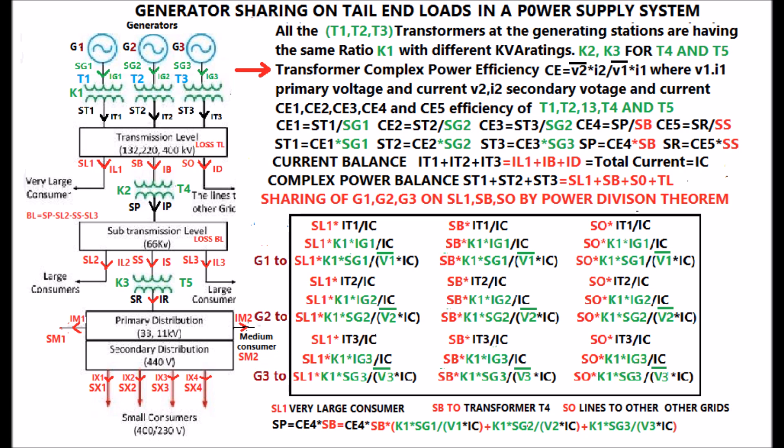Transformer complex power efficiency is defined as the ratio of complex power output to the complex power input — that is, the ratio of V2 conjugate multiplied by I2, divided by V1 conjugate multiplied by I1, where V1 and I1 are primary voltage and current, V2 and I2 are secondary voltage and current. CE1, CE2, CE3, CE4, CE5 are the efficiencies of T1, T2, T3, T4, and T5 respectively.